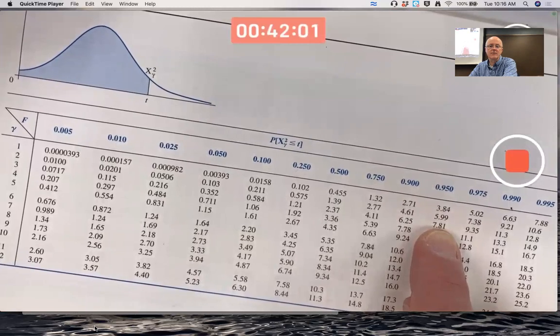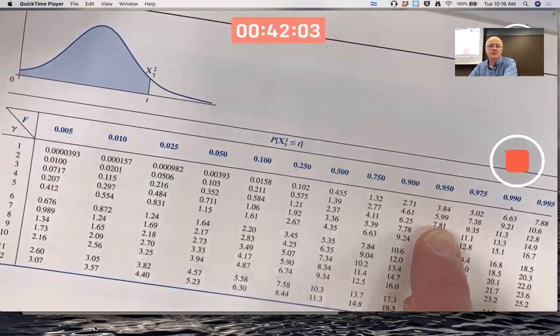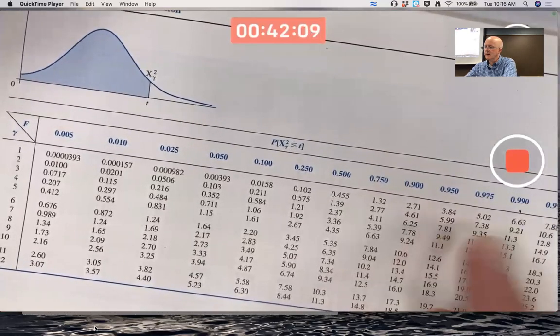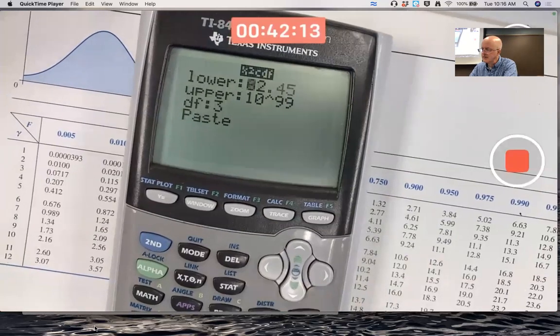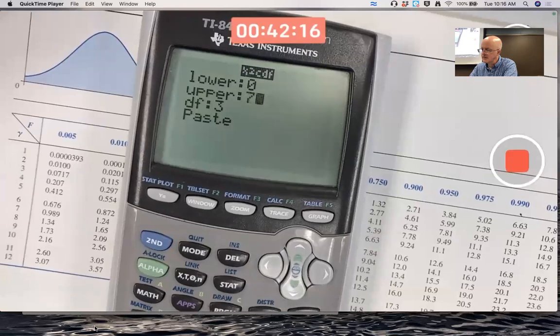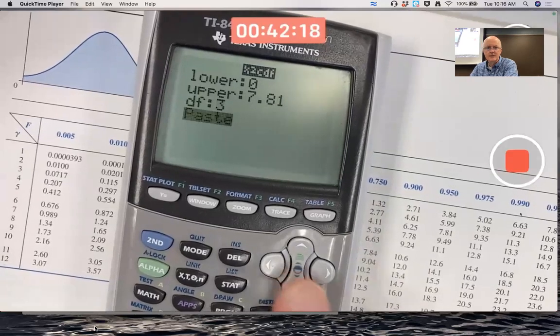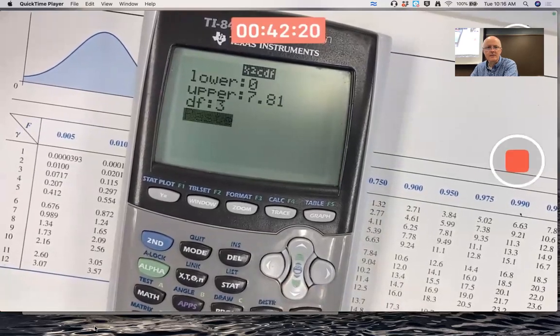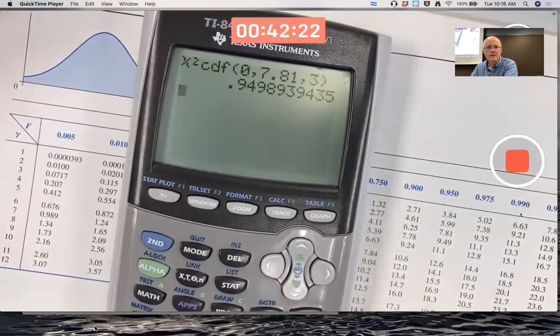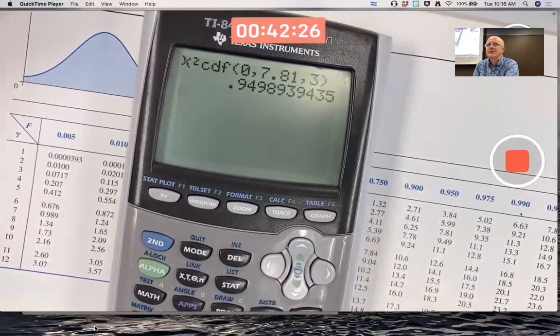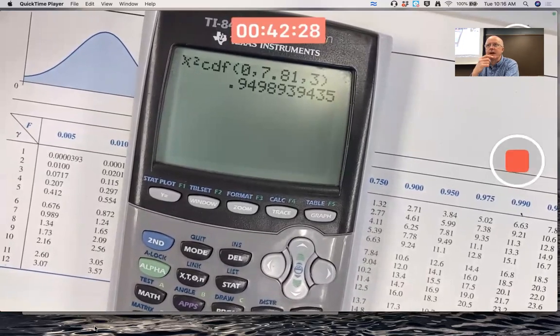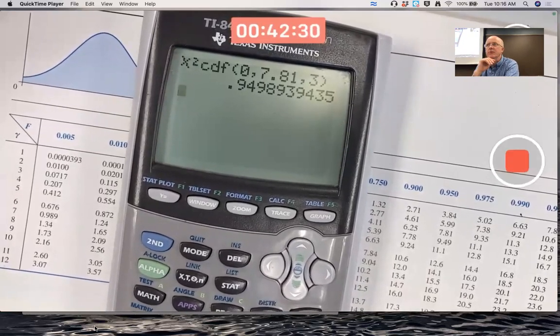And then you could test it with the calculator if you wanted to. So this should give 0.95, yeah okay. So yes, you can do it in terms of rejection region without figuring out a p-value, but you should feel comfortable either way.